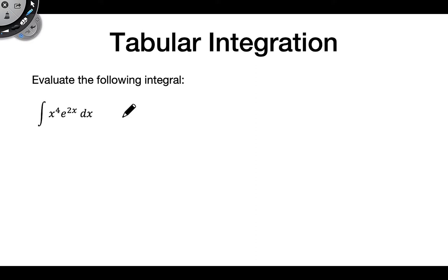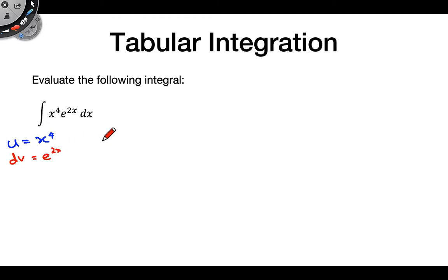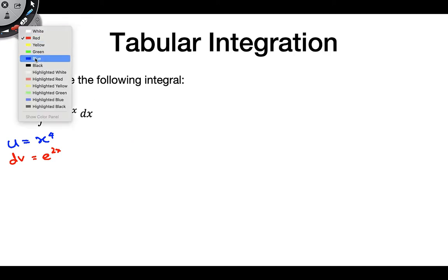Let's look at another example. Take a second and see if you can figure out what u should be and what dv should be. Hopefully you got that u is x to the fourth, and dv is e to the 2x dx. You could have figured this out using LIATE, or just remembering the pattern that we want to differentiate the x to the fourth. Either way, this is the correct selection.